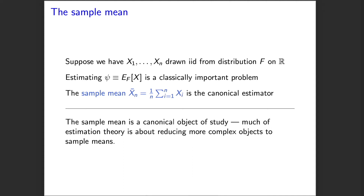The sample mean is a canonical object of study, both because we care about estimating this population mean through sampling, and also because when we engage with many other estimators — regression-based estimators, semi-parametric estimators, even some machine learning estimators — we find we can often reduce these to the study of the sample mean. There's often first-order behavior and higher-order behavior, and the first-order behavior determines asymptotically what's going on, and to first order these estimators often look like sample means of derived variables.